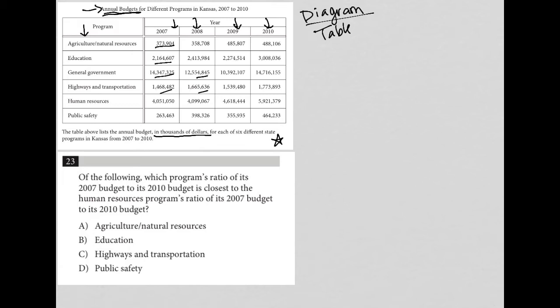Now I'm going to actually read the question. So the question says of the following, which program's ratio of its 2007 to 2010 budget? So I'm just going to write that down in my notes, 2007 over 2010 ratio. Don't forget on this test, anytime you see the word ratio, think fraction.